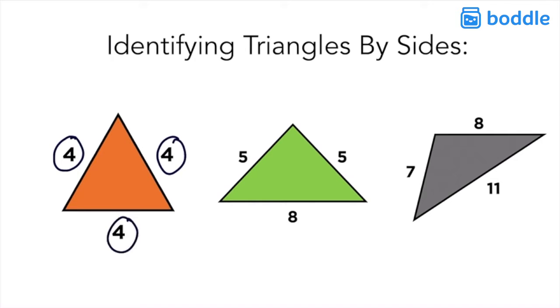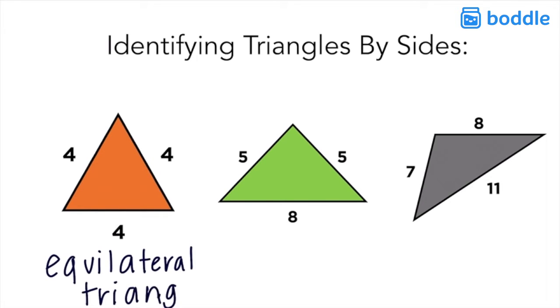Usually when all the sides are the same length you'll also see these little notches on each side of the shape to show that those sides are equal. That is called an equilateral triangle when all three sides are equal.